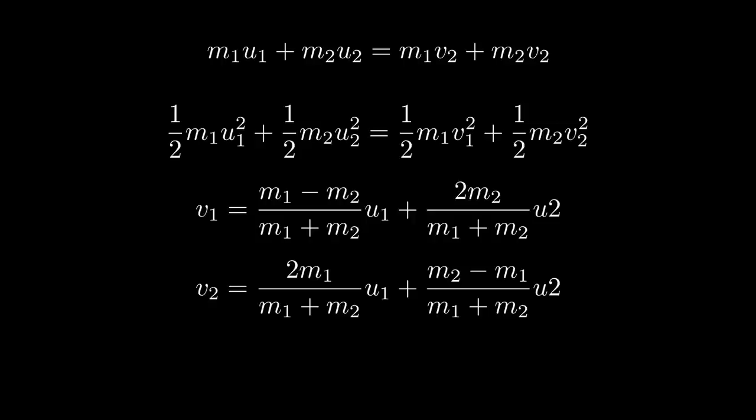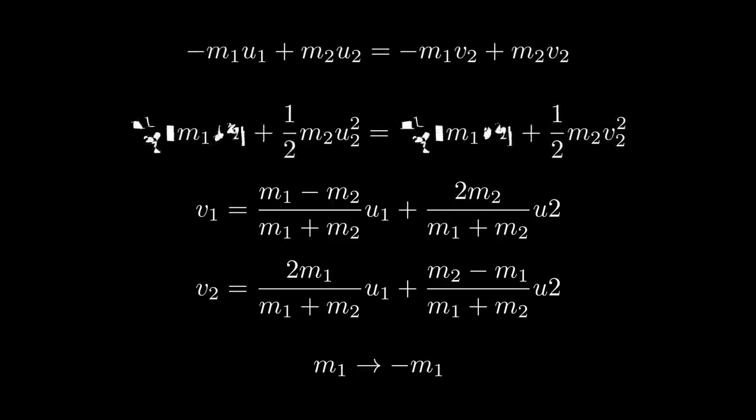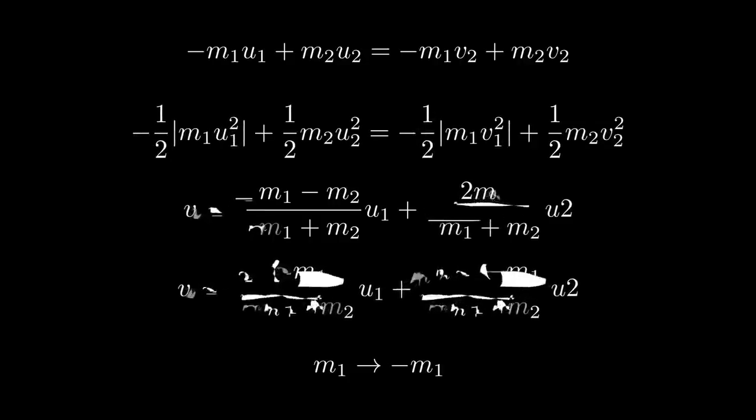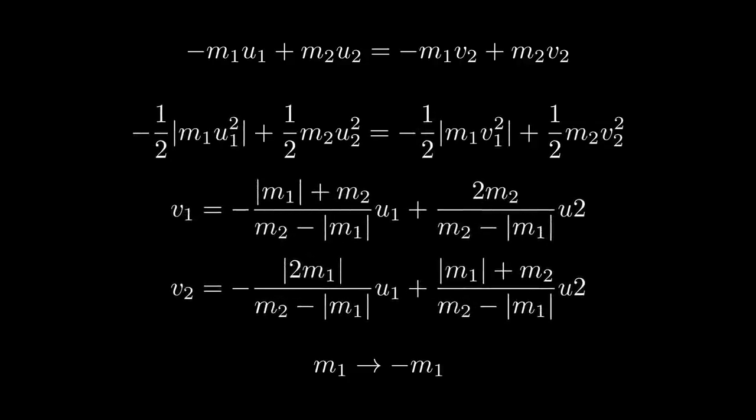This seems like the kind of toy model we can use to figure out how negative mass should behave on the simplest level. The question is, if we just plug a negative mass into the equations for an elastic collision, do we get a solution where the boxes don't pass through each other? And the answer is yes! But it's weird.